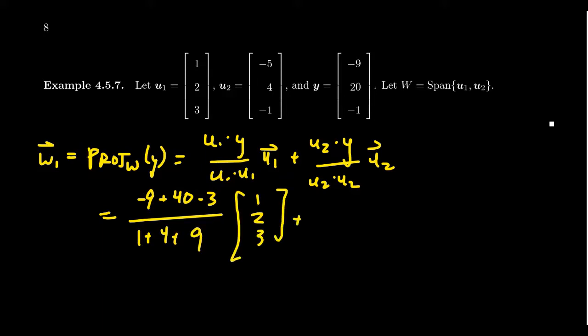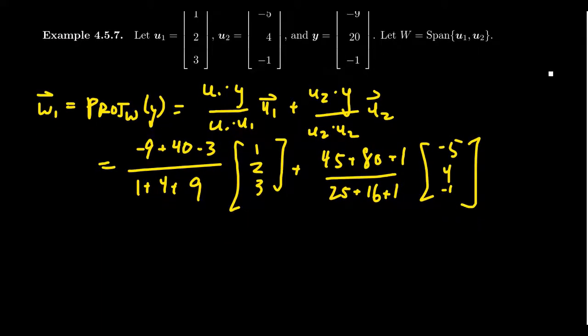And then for the second one, u2 dot y, we're going to get 45 plus 80 plus 1, and this sits above u2 dot u2. So we get 25 plus 16 plus 1, and we'll times this by [-5, 4, -1]. So you know, some arithmetic that has to be done here, but nothing, frankly, that's going to be too painful for us here.